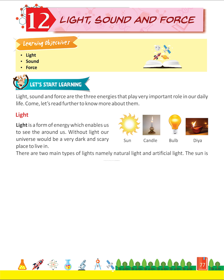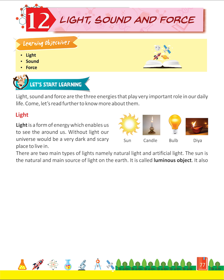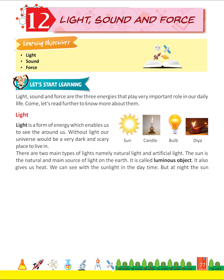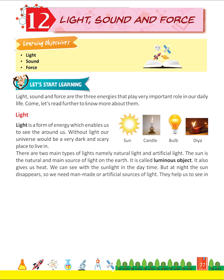The sun is the natural and main source of light on the earth. It is called a luminous object. It also gives us heat. We can see with sunlight in the daytime, but at night the sun disappears, so we need man-made or artificial sources of light.